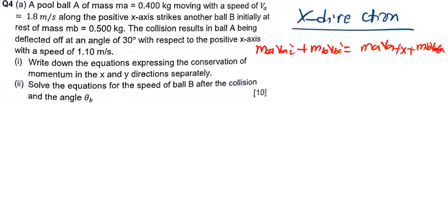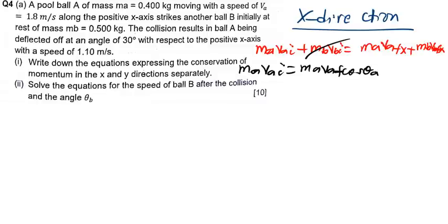We know that B was initially at rest, so that term drops out. We are going to have MA·VA_initial = MA·VA_final·cos(theta_A) plus MB·VB_final·cos(theta_B). This is the equation for the x-axis.